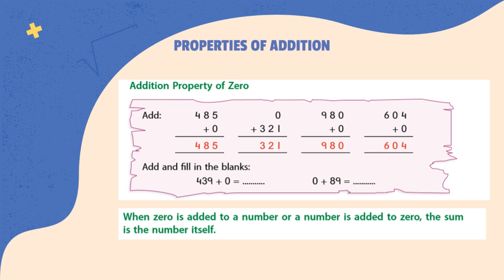Now, our last property is addition property of 0. This states that when 0 is added to a number or a number is added to 0, the sum is the number itself. For example, as you can see, adding 0 to 485 will give the same number 485. Similarly, by adding 0 to 439, we get 439, and adding 89 to 0, we get 89.